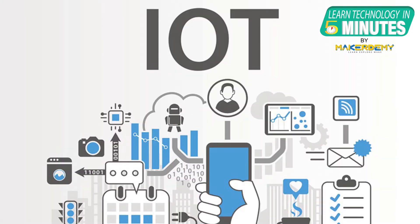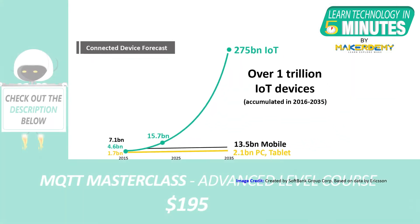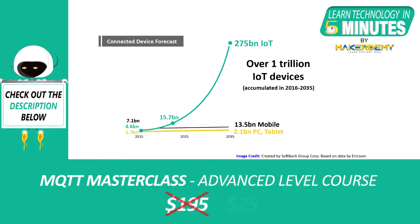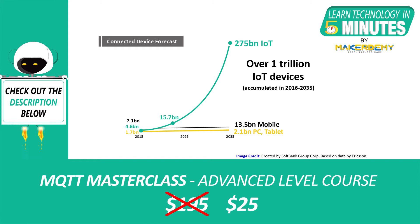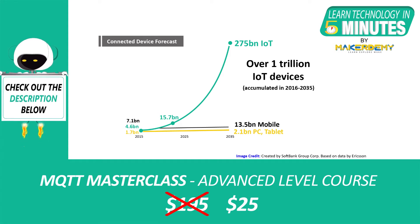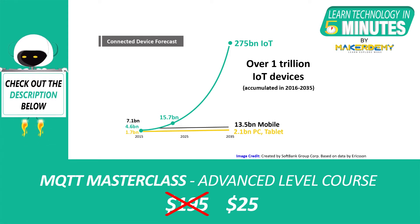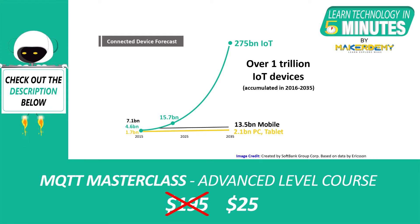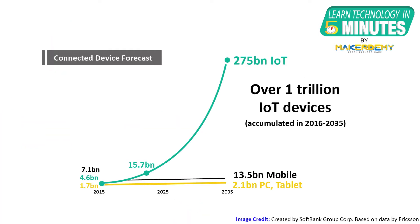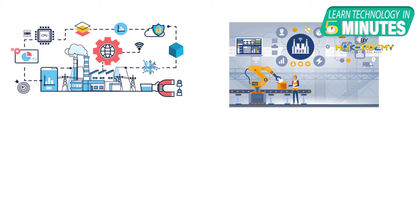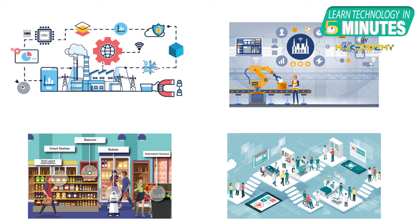The Internet of Things has gained immense popularity over the last few decades and its potential continues to grow. According to a study by Arm, it is predicted that the number of connected operational devices in IoT will reach up to 1 trillion by the year 2035. IoT and automation have acquired significance in various fields such as industrial, manufacturing, retail, healthcare and more.